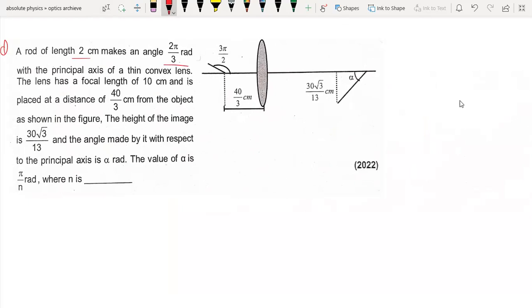So here what am I given? The lens has a focal length of 10 centimeters and the object is placed at a distance of 40 by 3 centimeters.